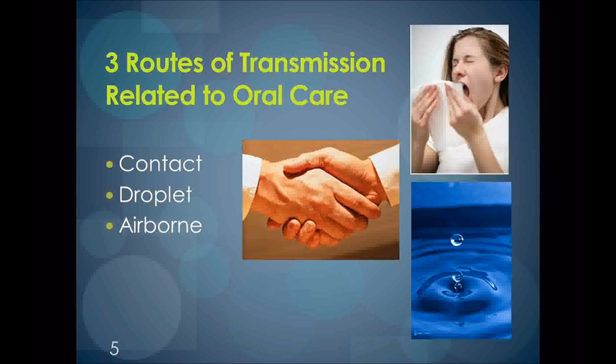Pathogens are unseen to the naked eye. The residents may be unaware that they have an infectious disease, or cannot communicate it if they do know. There are five main routes of transmission; today we will briefly discuss three: contact transmission, droplet transmission, and airborne transmission. Contact transmission, the most important and frequent mode of transmission for health care-associated infection, is divided into direct and indirect transmission. Direct contact involves body surface-to-body surface contact and physical transfer of microorganisms. Indirect transmission involves contact with a contaminated inanimate object, such as a denture brush.